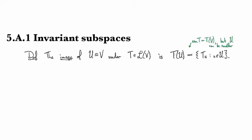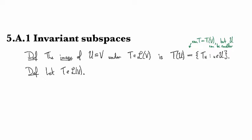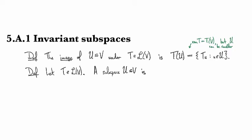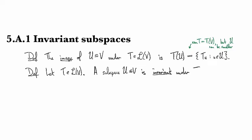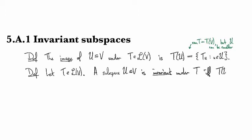And we'll also be doing all this for operators, because this chapter is all about operators. So, suppose we have an operator T. Then we say a subspace U is invariant under T if it gets mapped back into itself. In other words, if the image of U is contained back in U again.